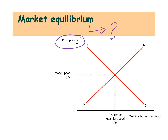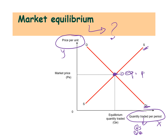We have a hypothetical supply and demand diagram where we put our prices on the y-axis and the quantity traded — which means quantity supplied and quantity demanded — on the x-axis. The point of intersection of the supply curve and the demand curve is this point here; I call it my equilibrium point.